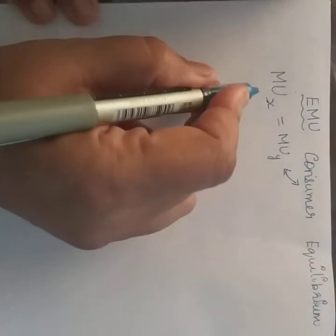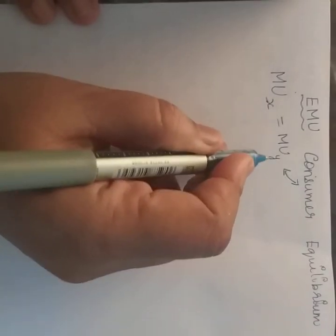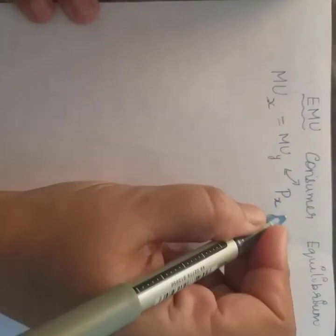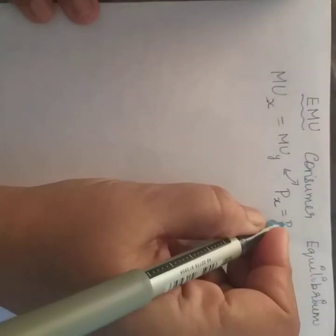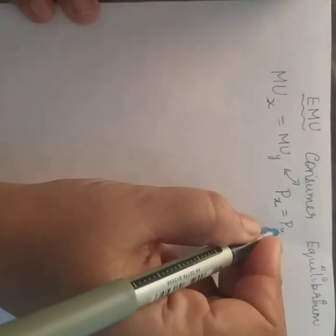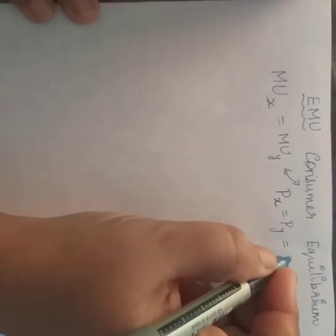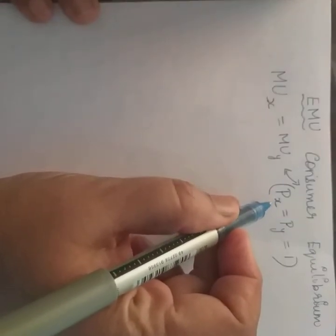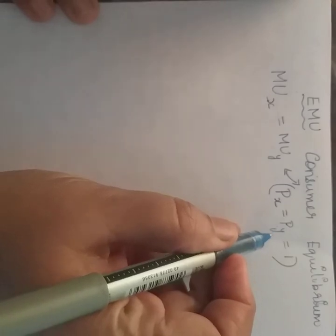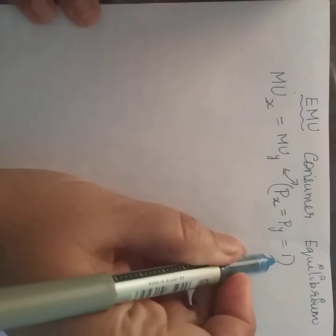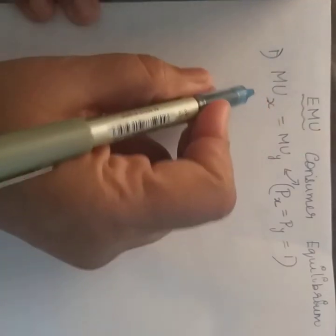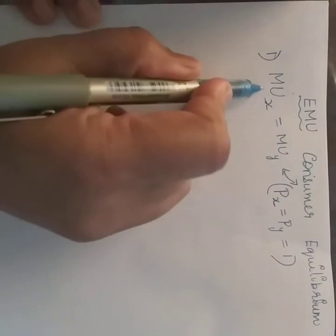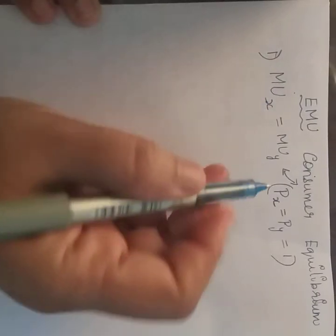This is the simplest condition for consumer equilibrium when the assumption about price is made such that the price of X commodity is equal to the price of Y commodity, and that is equal to 1. Only under this assumption is this the simplest way to express consumer equilibrium in the two-commodity case.